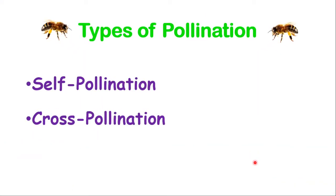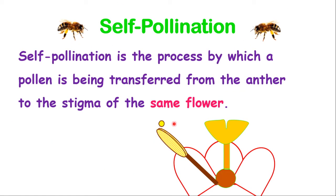Now there are two main types of pollination: self-pollination and cross-pollination. Self-pollination is a process by which a pollen is being transferred from the anther to the stigma of the same flower. Notice the demonstration — pollen grains are being transferred from the anther over to the stigma, occurring within the same flower.